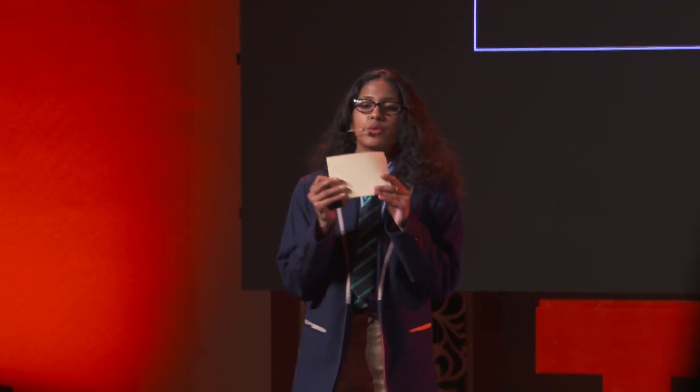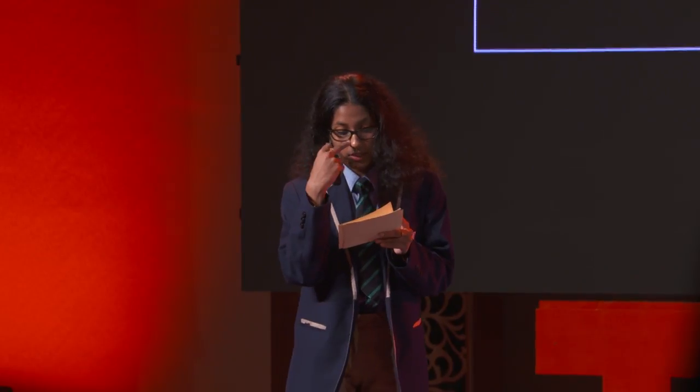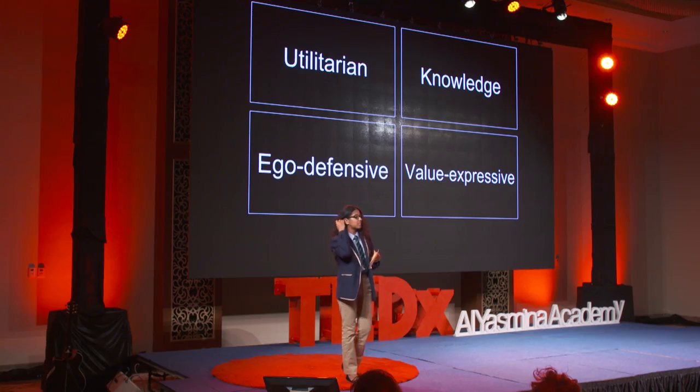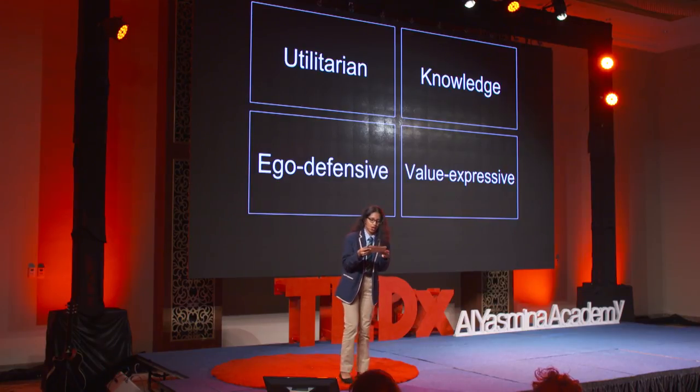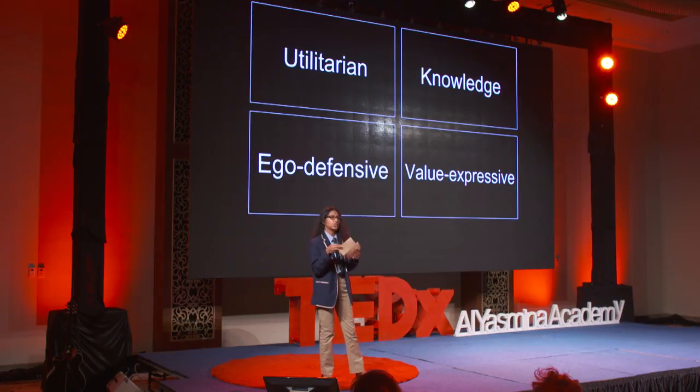Now, remind yourself of the attitude you thought of before when we were discussing the ABC model — the affective, the behavioral, and the cognitive components. Figure out its purpose. Is it an attitude towards something you want to avoid or desire? Is it an attitude towards information you recently received? Is it an attitude that is self-esteem protecting? Or is it one that reflects your central beliefs or values? Understanding the functions and the components is the underlying principle of becoming aware of them, and later on controlling and even manipulating them.